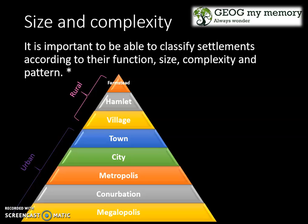Size and complexity need to be understood when classifying settlements, especially according to their function and their pattern. For rural settlements you have your farmstead, hamlet, and village, whilst urban settlements include your town, city, metropolis, conurbation, and megalopolis.